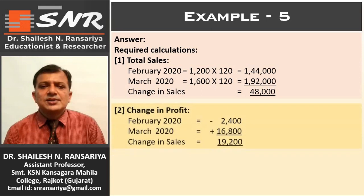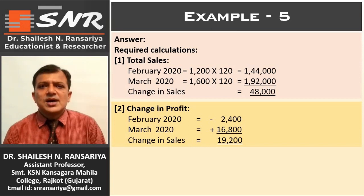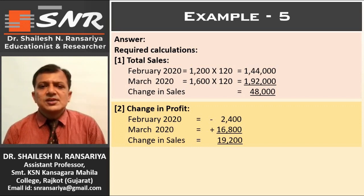Second, we calculate the change in profit by comparing February and March. In February there is a loss of ₹2400 and in March a profit of ₹16,800. Whenever we calculate the change in profit with one month showing a loss and another showing a profit, we take the total of both figures. So the net difference is ₹19,200.